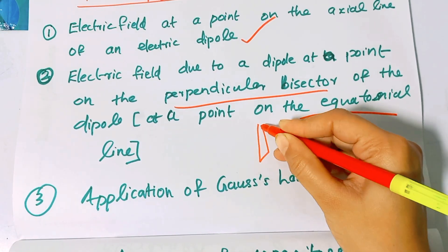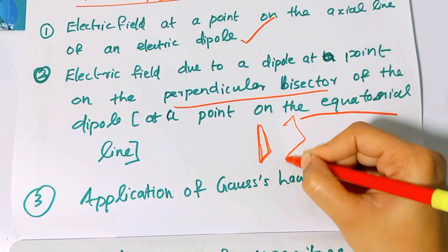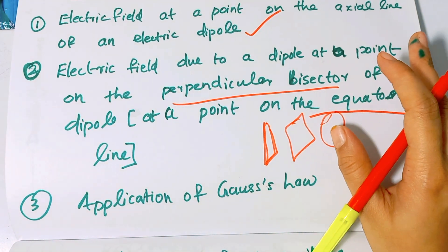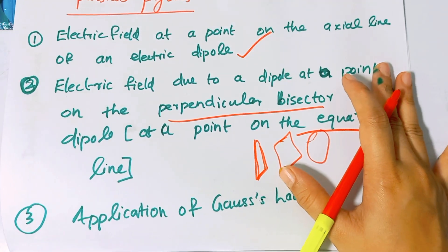They are conducting wire, plate, and sphere. These three applications of Gauss's law are very important.